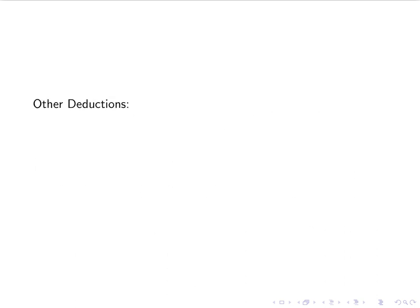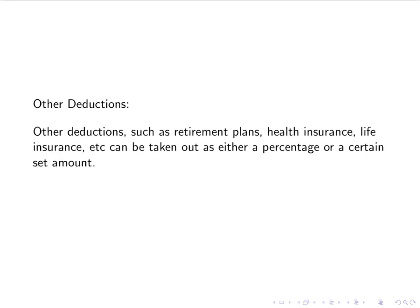We have some other deductions that you'll see: retirement plans, health insurance, life insurance, union fees, and more. These other deductions can be a percentage of your pay or a certain set amount. Union dues are usually a fixed amount each time, while a retirement plan is usually a percentage, though it could also be a set amount depending on your options.